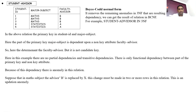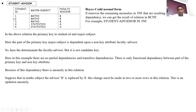Because of this dependency there is an anomaly in this relation. Suppose that in the Math subject the advisor B is replaced by X — this change must be made in two or more rows, otherwise it results in an update anomaly.